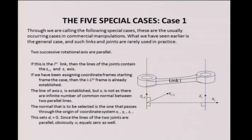We were looking at the special cases. We already looked at case 1 in the previous class, in which we had 2 axes which are parallel. There are an infinite number of common normals, and we pick the common normal which passes through the earlier axis so that the d_i parameter goes to 0. Alpha is 0 and the link length is the distance between the parallel lines.